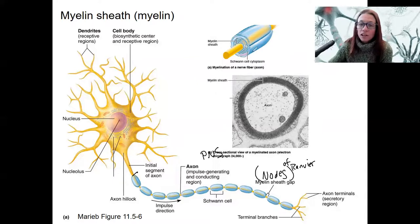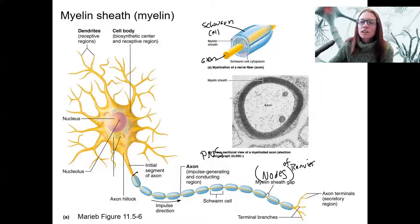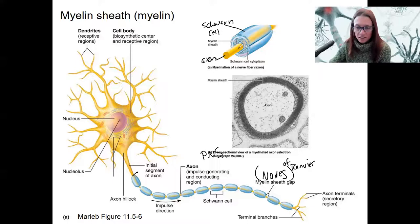And these are actually surrounding the axon. So here is the axon. This is the Schwann cell. It actually physically surrounds and insulates the axon. These are all individual Schwann cells.